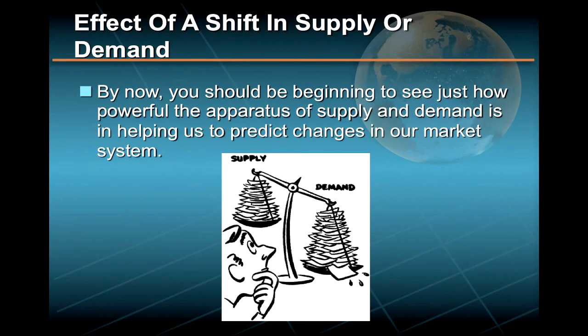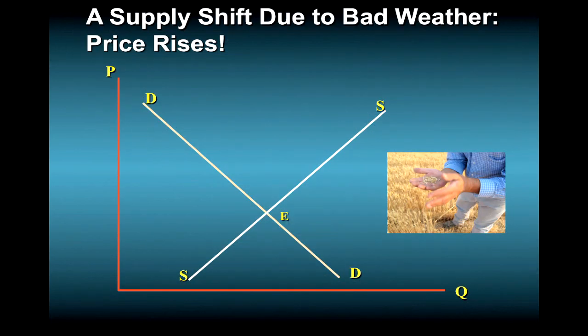By now, you should be beginning to see just how powerful the apparatus of supply and demand is in helping us to predict changes in our market system. For example, suppose a drought in the Midwest severely damages the wheat harvest.